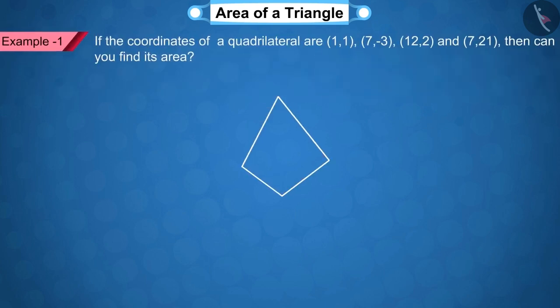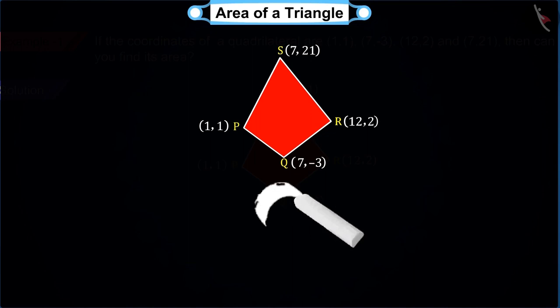If the coordinates of a quadrilateral are (1,1), (7,-3), (12,2) and (7,21), then can you find its area? Let's discuss. First, let's represent the coordinates of the quadrilateral with the points P, Q, R and S. Can you guess how to find the area of this quadrilateral?